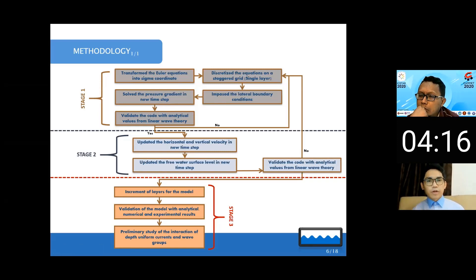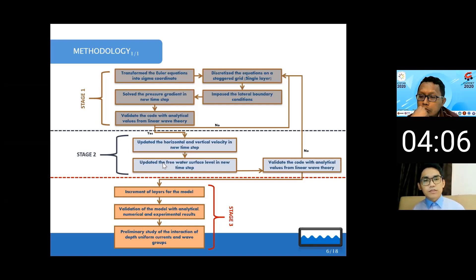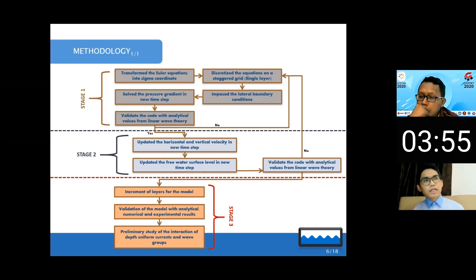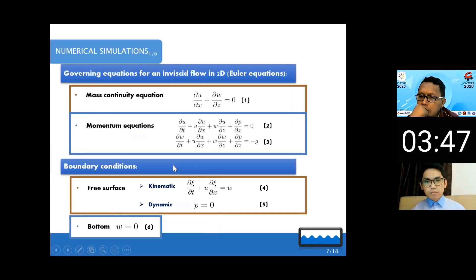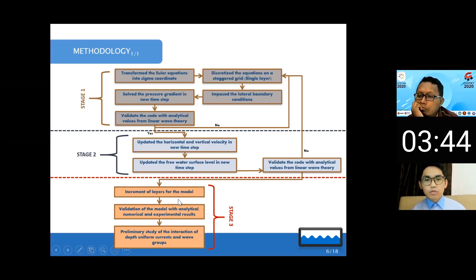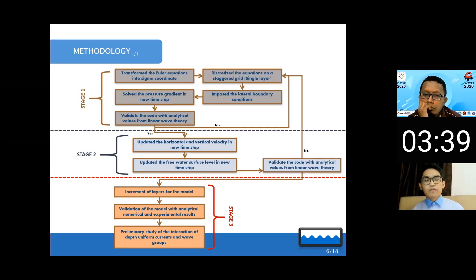After solving for the pressure, if it agrees with the analytical values we go to the next step: we update the vertical velocity and the water surface for the next time step. So we start at time equal to zero, solve, and if things are correct we advance to time step t plus one, and so on. After we finish stage two, we go to stage three.